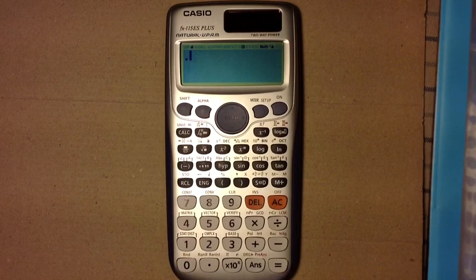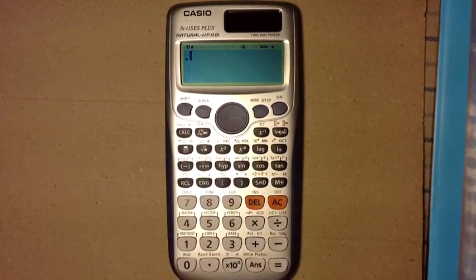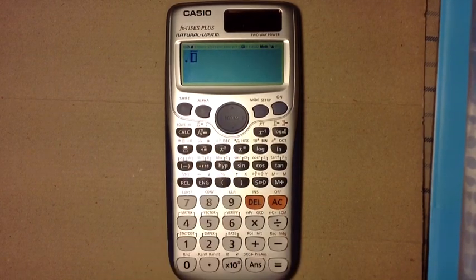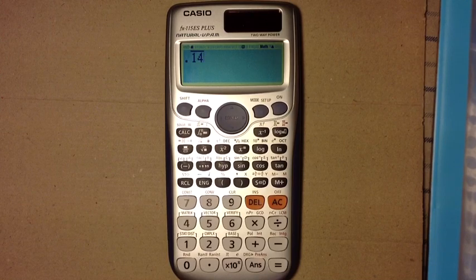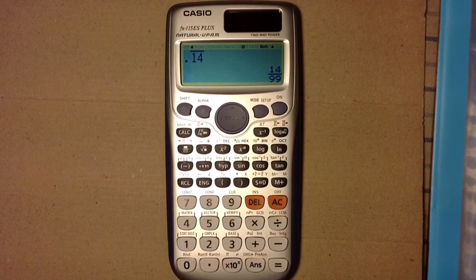The 14 continues on forever. Press alpha, and then the square root key, and it inserts that bar, and I can just type 1.4. If I just put enter, I get the fraction of 14 over 99.